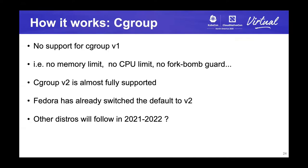With regard to cgroups, we didn't have support for cgroup v1. That means on a cgroup v1 host, we couldn't set up memory limit, CPU limit, and PID limit. But we can use cgroup v2. Fedora has already switched the default to cgroup v2 recently. Probably other distributions will follow soon.